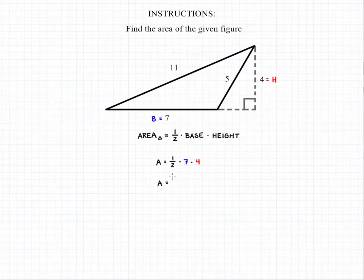If we work out that multiplication we'll have the area equal to one half times 28, and if we clean that up we'll have our final answer, which is the area of this triangle is equal to 14.